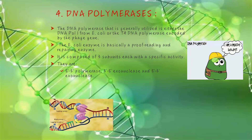DNA polymerases. The DNA polymerase generally utilized is either DNA polymerase 1 from E. coli or the T4 DNA polymerase encoded by the phage gene. The E. coli enzyme is basically a proofreading and repairing enzyme. It is composed of 3 subunits, each with a specific activity: 5-to-3 polymerase, 3-to-5 exonuclease, and 5-to-3 exonuclease.